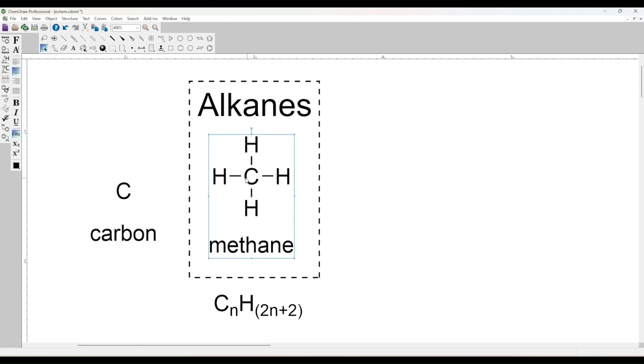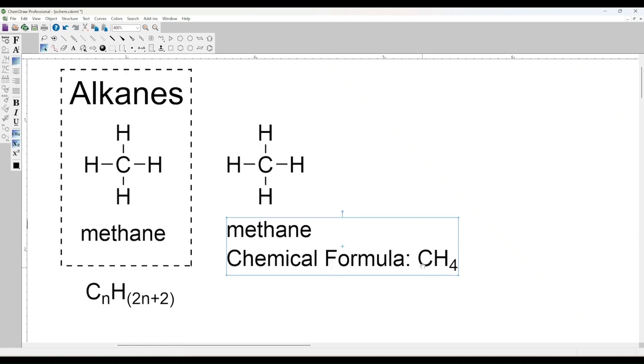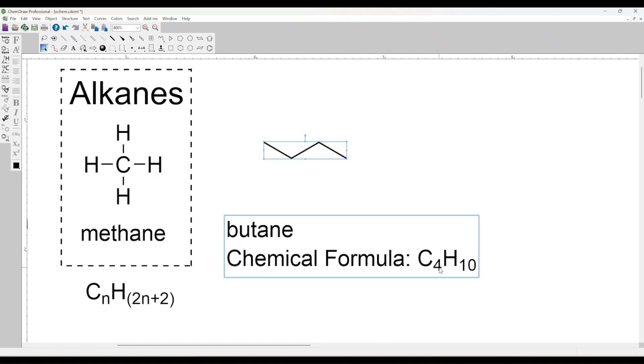Examples include methane, where there's one carbon, and 1 times 2 plus 2 equals 4 to get the formula CH4. Also ethane, C2, 2 times 2 plus 2 equals 6, so H6. Propane, 3 times 2 plus 2 equals 8, and butane, 4 times 2 equals 8, plus 2 equals 10.